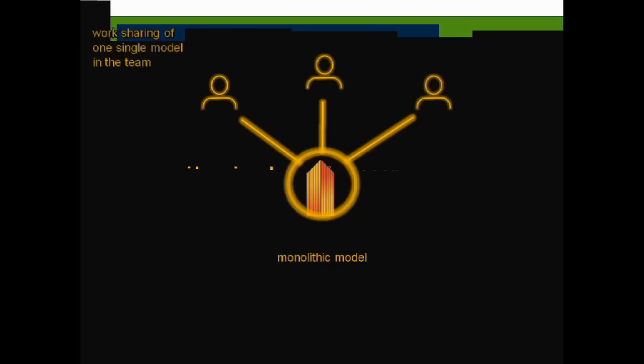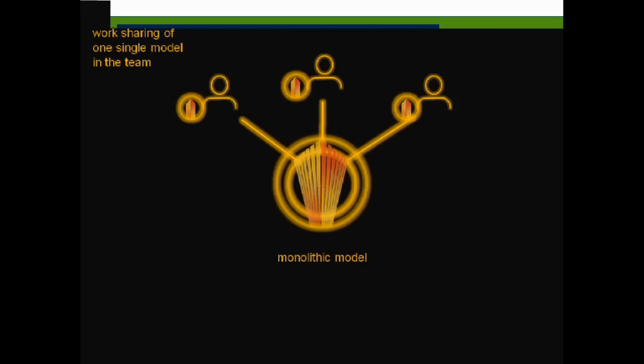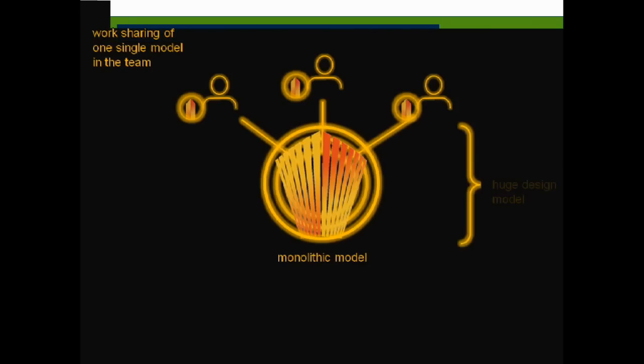While following the concept of a central monolithic model, you would probably define worksets and have a team working in parallel on designing the model. To keep all the parametrics, everybody in the team needs to have a full copy of the information model. While your design team is working, the model is growing. And I think there is no question about the fact that those information models become very, very big.